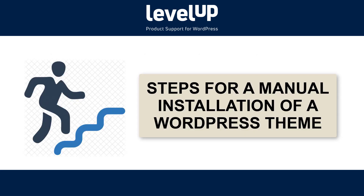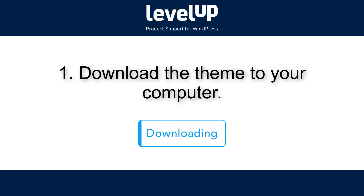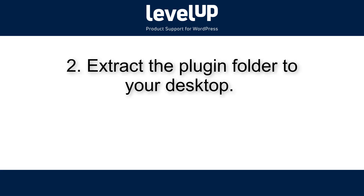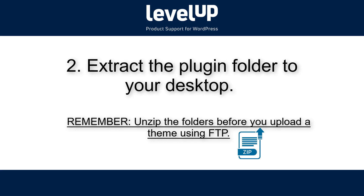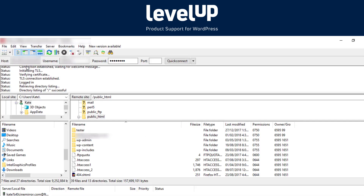Here are the steps for a manual installation of a WordPress theme. First of all, download the theme to your computer. Then extract the theme folder to your desktop. Remember, you must unzip the folders before you upload the theme using FTP. Open the FTP client on your computer and connect to your website using the login credentials provided by your web host.